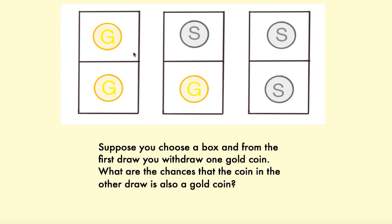In the first box, both drawers have gold coins. In the second box, the first drawer has a silver coin, the second drawer has a gold coin, and in the last box both drawers have silver coins.